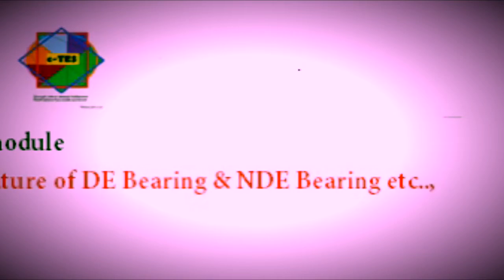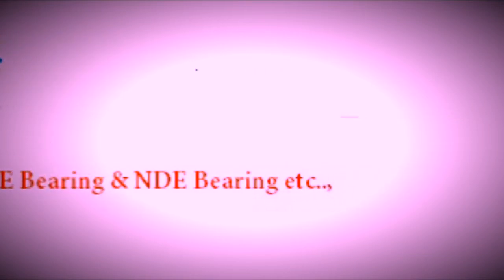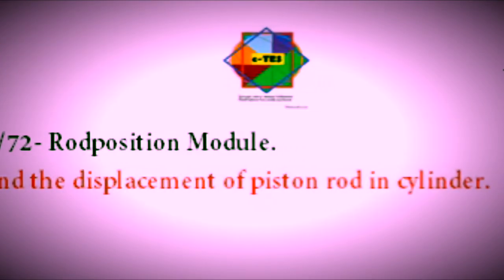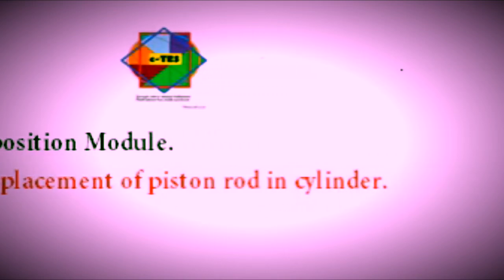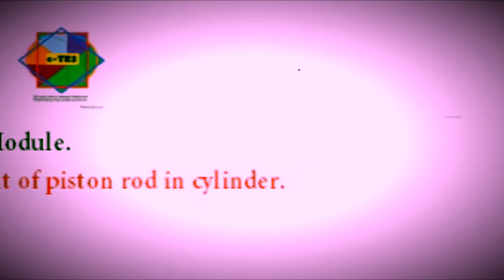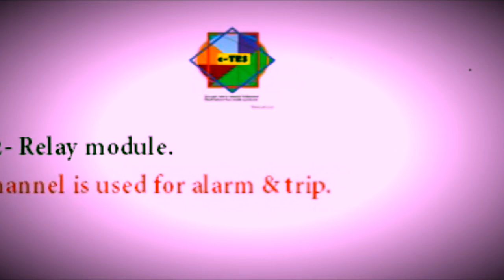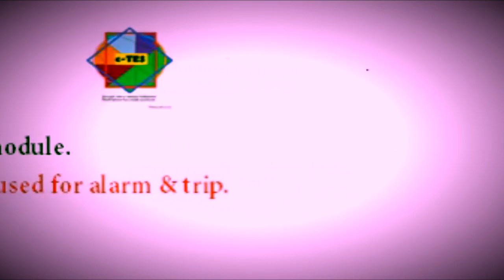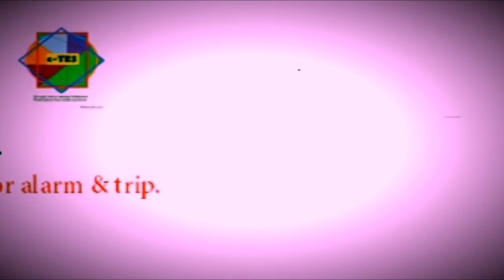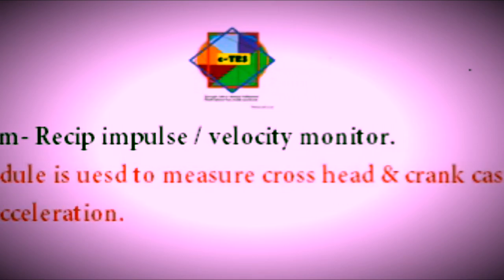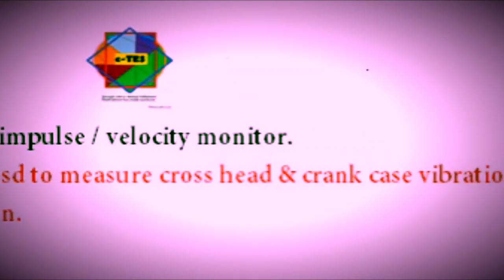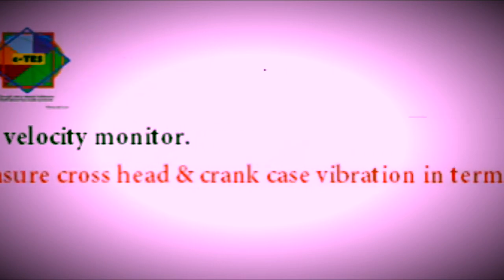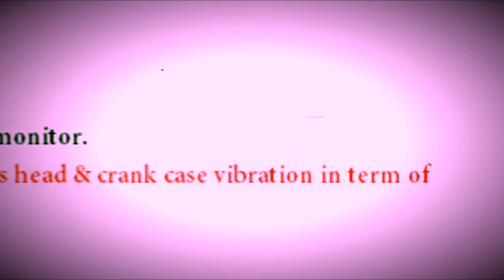The 3500/75 is used for radial vibration monitoring. The 3500/72 is a rod position module, simply called a rod drop monitor. The 3500/32 is a relay module used to make alarm as well as a trip in a danger situation. The 3500/70 is a velocity module used for crosshead and crankcase vibration in terms of acceleration.